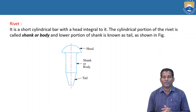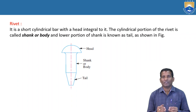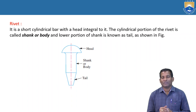Riveted joints come under permanent type of fastening. Two plates are connected with the help of riveting, and you cannot separate them after riveting without destroying the joint. This type of joint is called a permanent type joint.